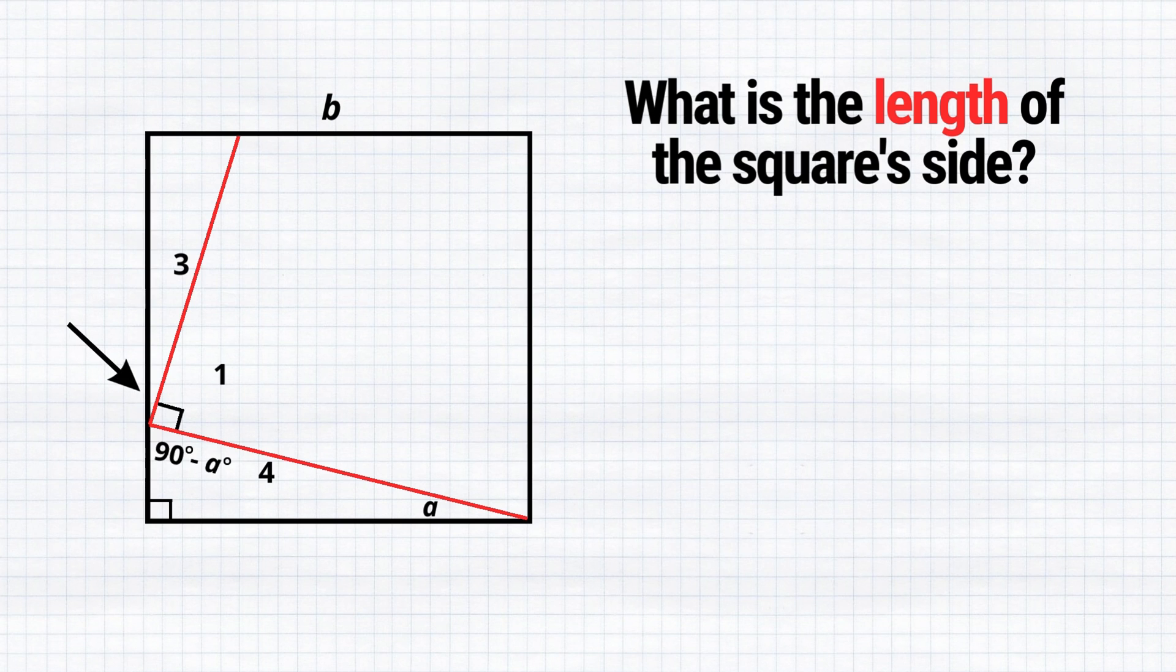To find out this angle, we can do 180 degrees minus 90 degrees minus 90 degrees minus α degrees. When we simplify it, we just simply get α degrees. As I mentioned earlier, these two right triangles have exactly the same angles.